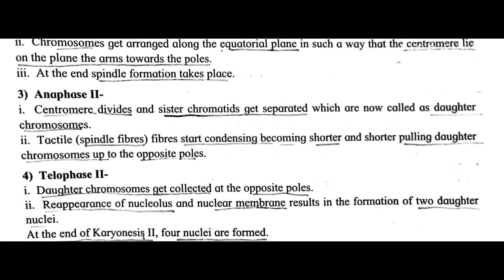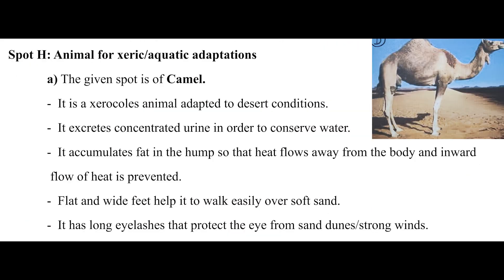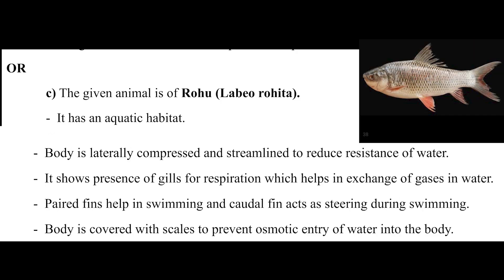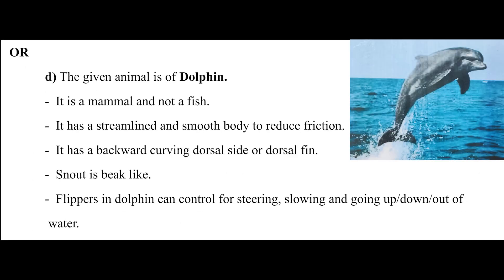Next is spot H, about adaptation in xeric or aquatic animals. First may be a camel, second may be a kangaroo rat, third may be a Rohu fish, and fourth may be a dolphin. Same here, photograph or preserved specimen will be there.